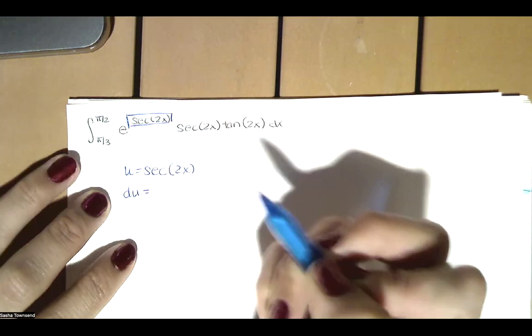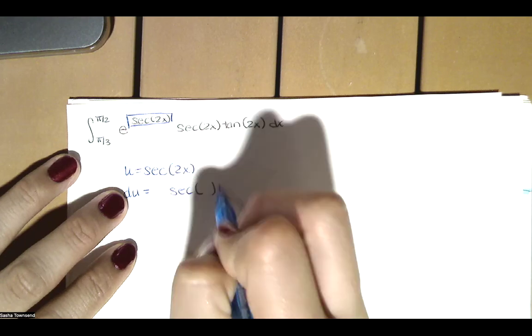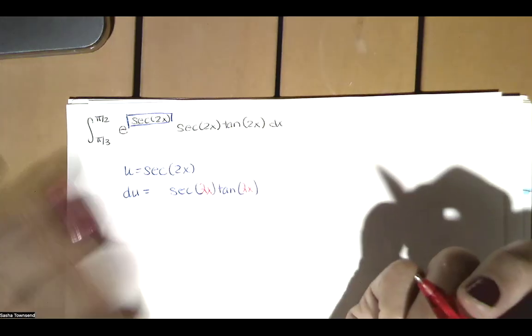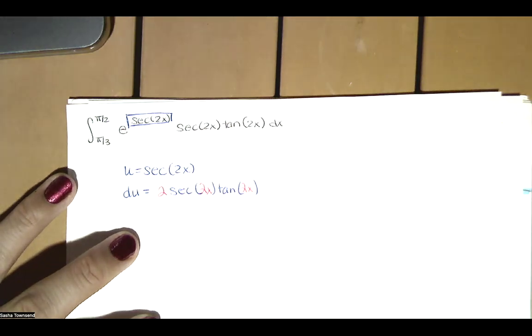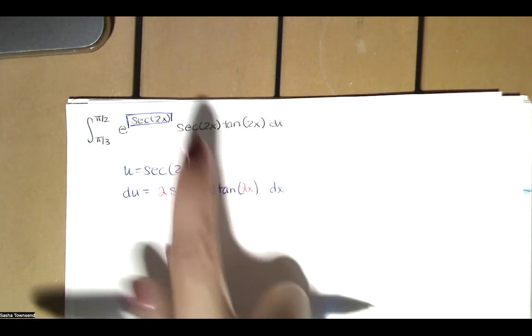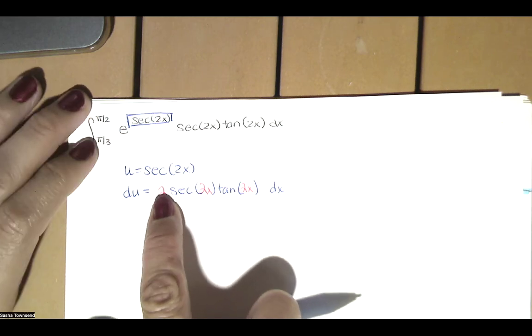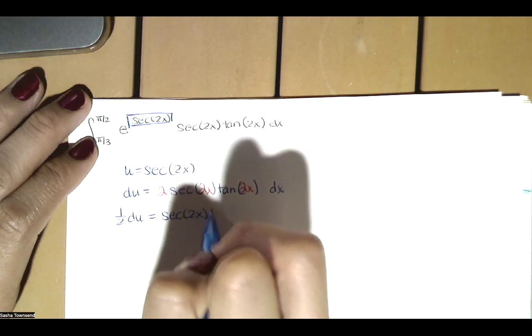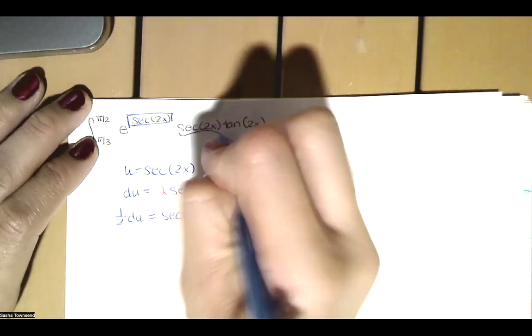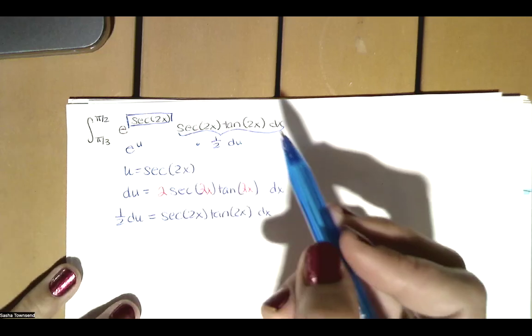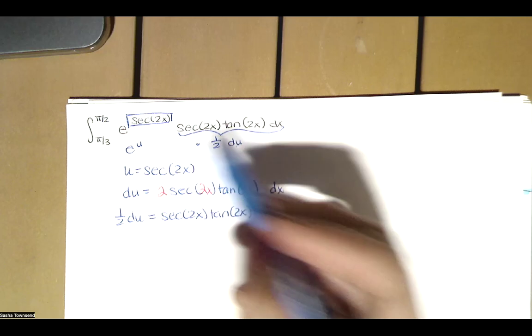The derivative of u is the derivative of secant of the inside function times tangent of the inside function, put back inside, multiplied by the derivative of the inside by the chain rule. The derivative of 2x is 2, so du equals 2 times secant(2x) tangent(2x) dx. Do I have secant(2x) tangent(2x) dx up there? Yes — we just don't need the 2. Multiplying both sides by 1/2, we get 1/2 du equals secant(2x) tangent(2x) dx. So we replace that piece with 1/2 du and e to the secant(2x) with e to the u. The antiderivative of 1/2 e to the u is 1/2 e to the u.